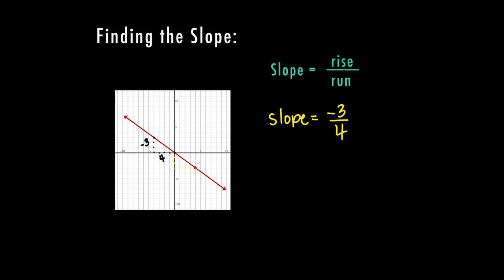And so my slope of negative three over four means that I'm going to have a point every time I go down three and right four, which means since it is a negative, this is a decreasing slope or a negative slope.